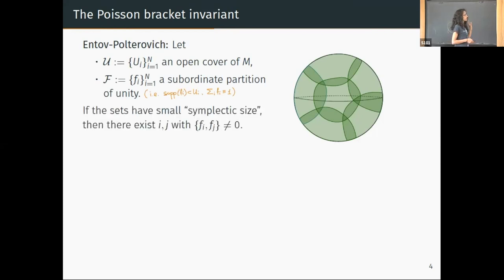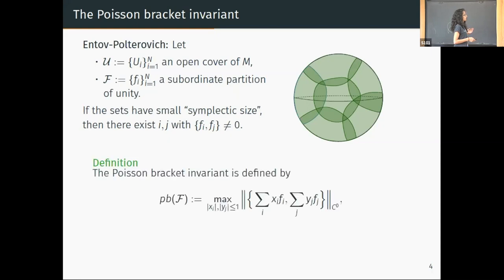What they showed is that if the sets are all small in some symplectic notion of size, then the Poisson brackets of these functions cannot all be zero—there is at least one pair with non-zero Poisson bracket. If you interpret the Poisson bracket as a certain noise of this localization, it means you must have a certain noise if you localize your phase space into sufficiently small pieces. Following this result, Polterovich defined an invariant which measures the Poisson bracket or the non-commutativity of such collections of functions.